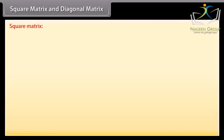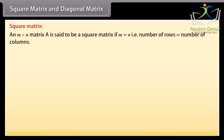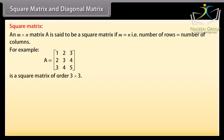Square matrix and diagonal matrix. Square matrix: An M by N matrix A is said to be a square matrix if M is equal to N, that is, number of rows is equal to number of columns. For example, A is a square matrix of order 3 by 3.